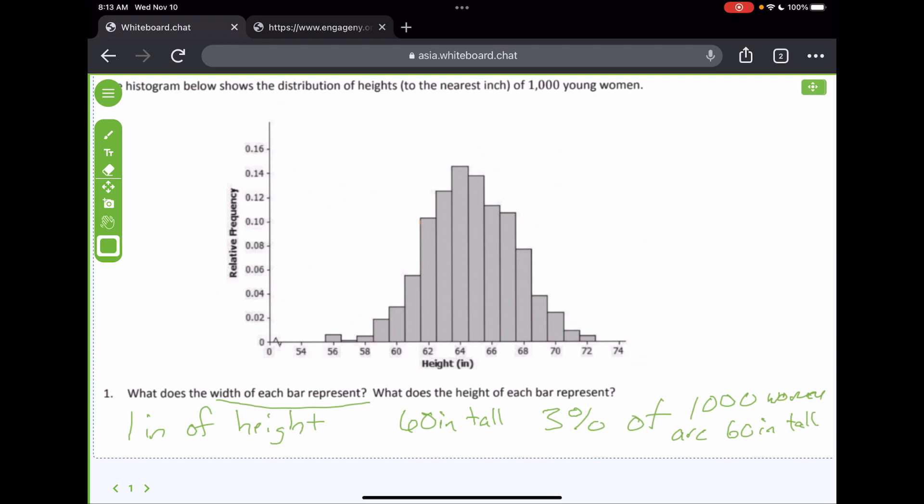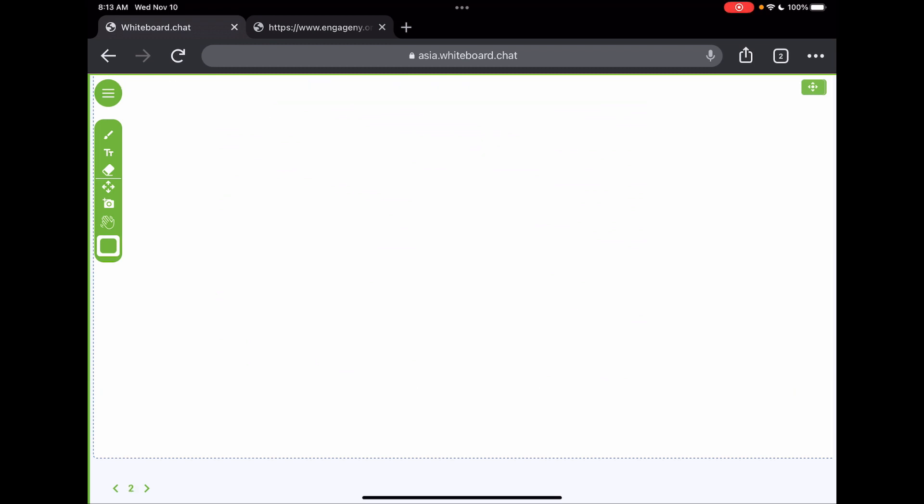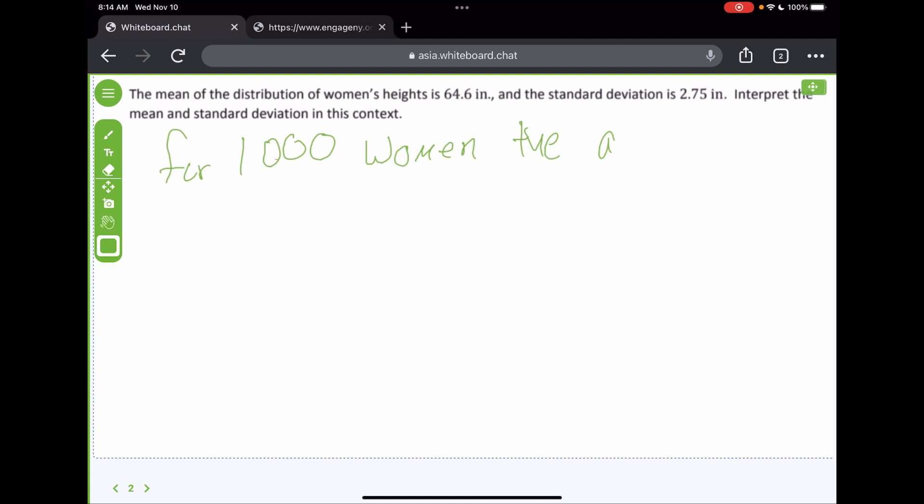And they got a question about that. Okay. So, let's go to page 2. The mean of the distribution of women's height is 64.6 inches, and the standard deviation is 2.75 inches. Interpret the mean and standard deviation in this context. Well, all you would say is for 1,000 women. The average height, or typical, or typical, most times it says typical, is 64.6 inches. Okay? That's what the mean is.